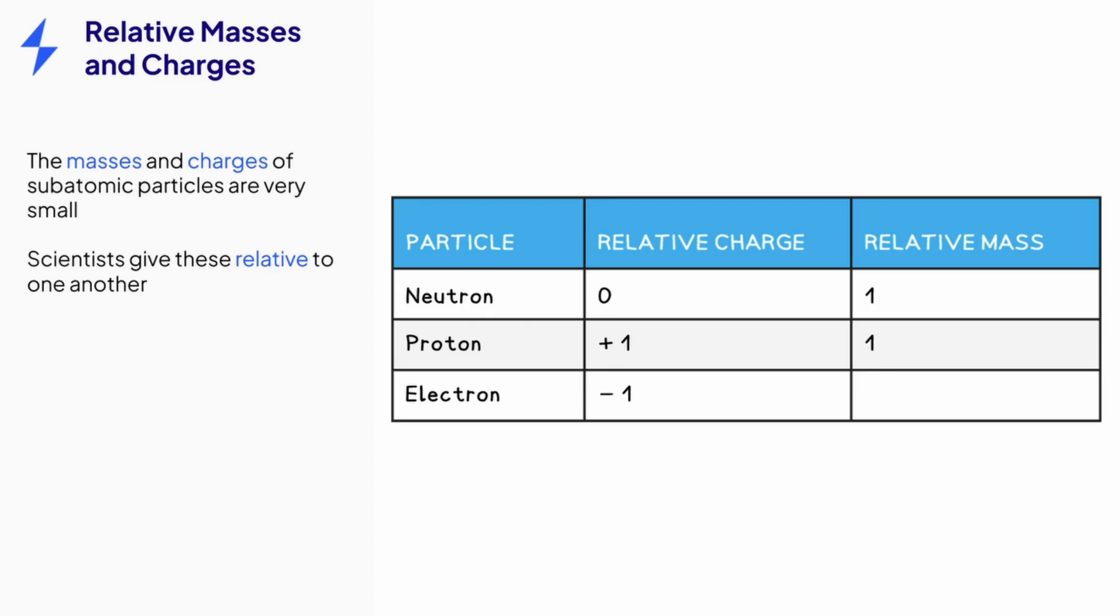Neutrons and protons both have a relative mass of 1. The mass of an electron however is 2,000 times smaller than these. You won't need to know the relative mass of an electron in your exam and you can just use the term negligible. This means it's so small that it's unimportant.